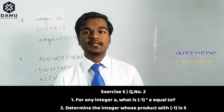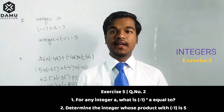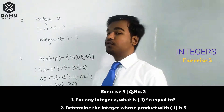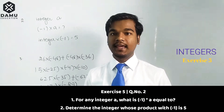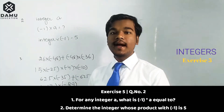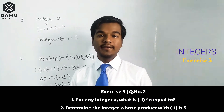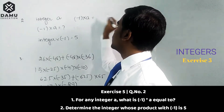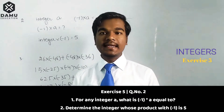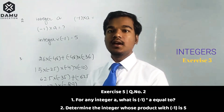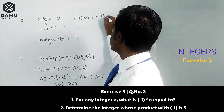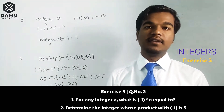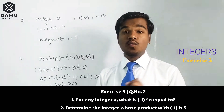In this module we are going to discuss the solutions for the second and third questions. The second question is: for any integer a, what is (-1) × a? The product of minus 1 into a will always be minus a. So the answer is minus a.